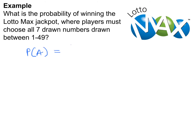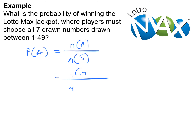The probability of winning is the number of possible ways you can win divided by the total number of all possible outcomes. Out of the seven winning numbers you must choose all seven, and there are 49 numbers to choose seven from. So that's 7 choose 7 over 49 choose 7. 7 choose 7 is 1, and 49 choose 7 is 85,900,584. Good luck winning that!